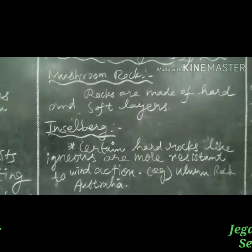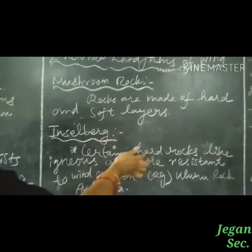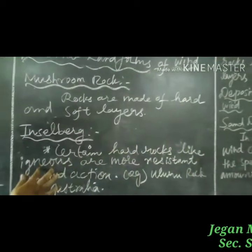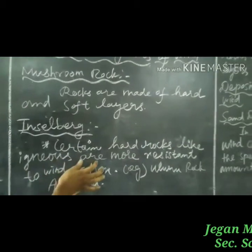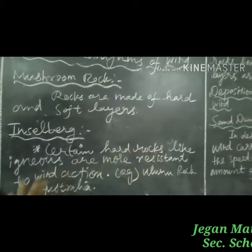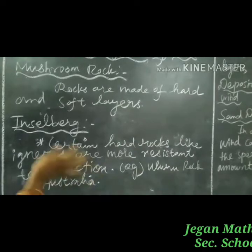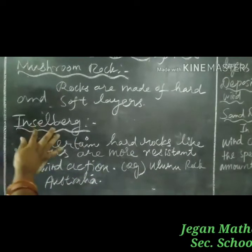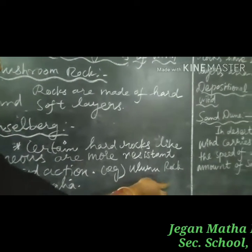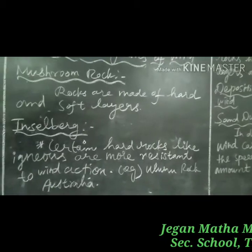Next is Inselbergs. Certain hard rocks like igneous rocks are more resistant to wind action. These are called inselbergs. For example, Uluru Rock in Australia.